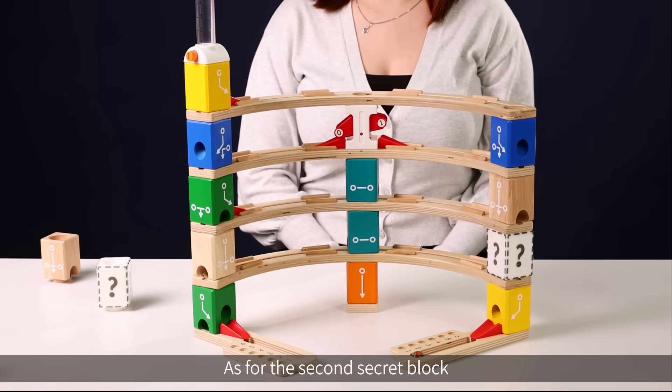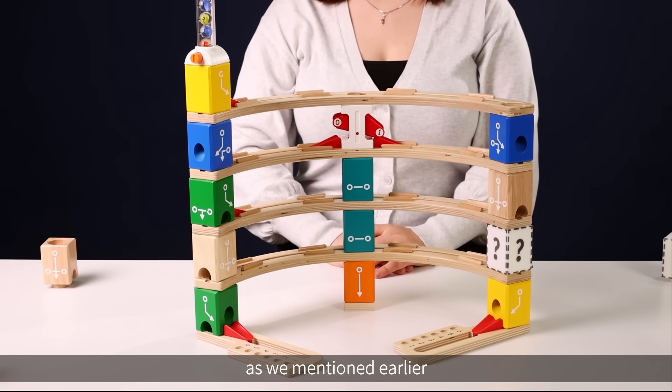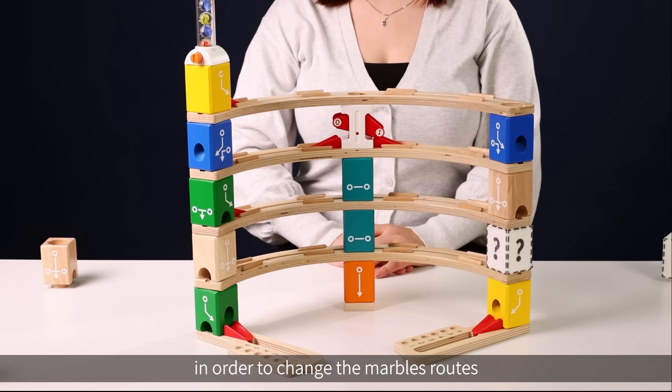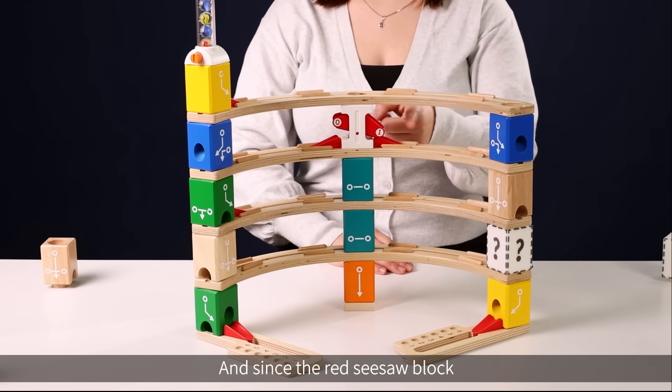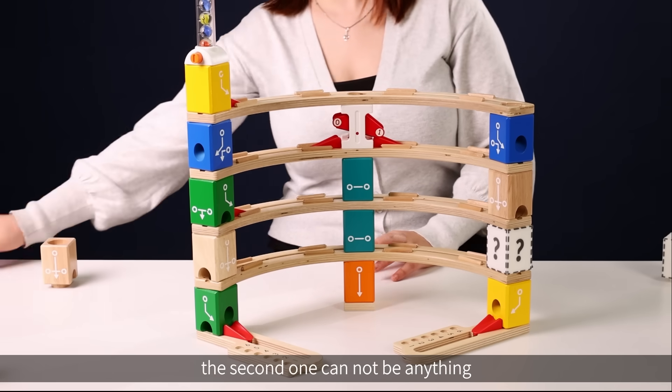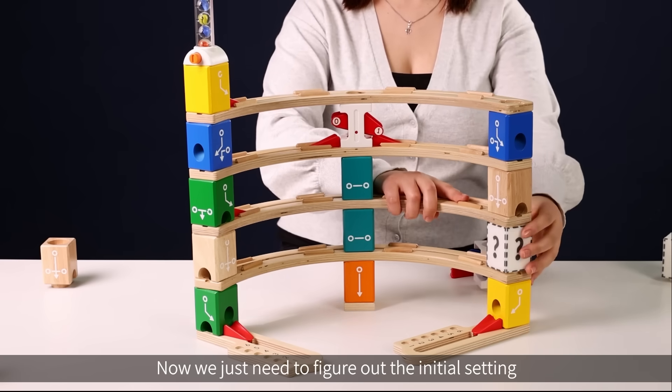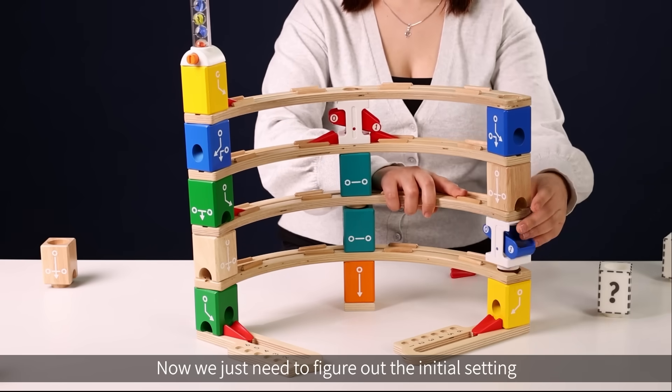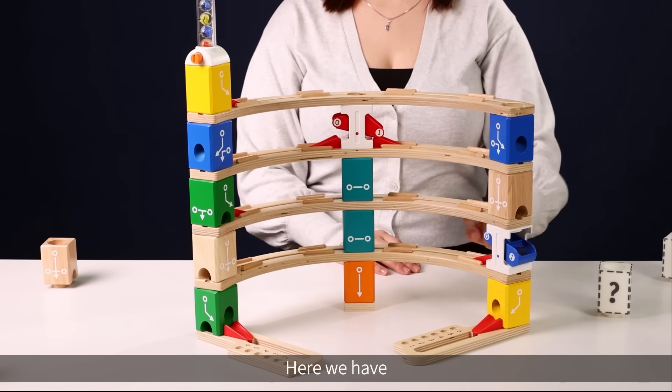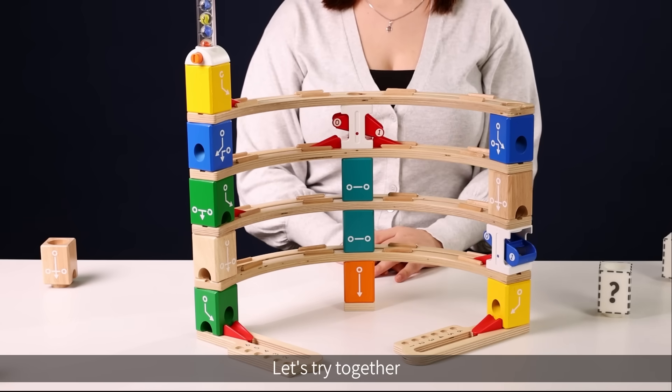Before it hits the second secret block. As for the second secret block, as we mentioned earlier, we're going to need a seesaw block in order to change the marbles' routes. And since the red seesaw block has already been used, the second one cannot be anything but the blue seesaw. Now we just need to figure out the initial setting of the blue seesaw block. Here we have zero position up and one position down. Let's try together.